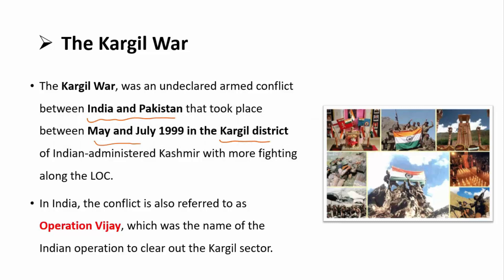The mission — the operation of the war — was called Operation Vijay. This was the name of the Indian operation to clear out the Kargil sector, where infiltrators, militants, and the army of Pakistan had intruded. The operation to counter the war was called Operation Vijay.